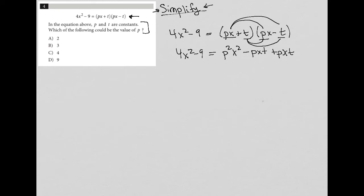And then the last two terms, right? So f, o, i, l is what I'm following would be a minus t squared. These guys would cross out. So I'd be left with 4x squared minus 9 equals p squared x squared minus t squared.